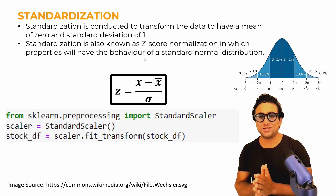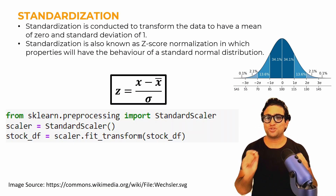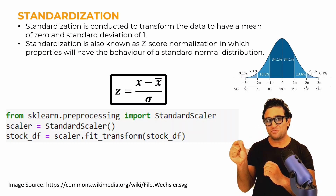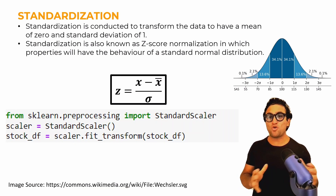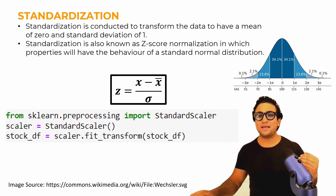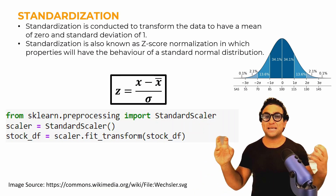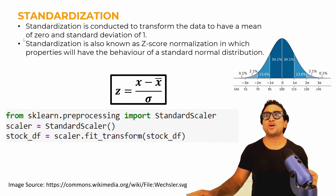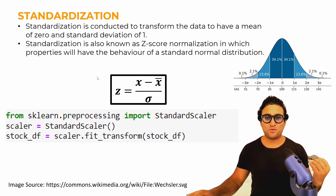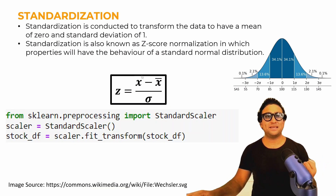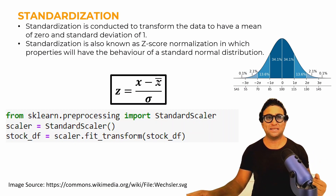What about standardization? Standardization is conducted to transform the data to have a mean of zero and a standard deviation of one. This is drastically different compared to normalization. The standardization process is also known as z-score normalization — we shift our data to have an average of zero and a standard deviation of one. The equation is: take any data point, subtract the average (mean of the distribution), then divide by sigma (the standard deviation).